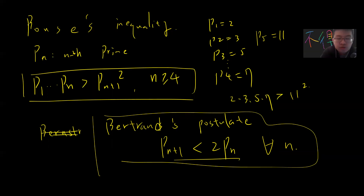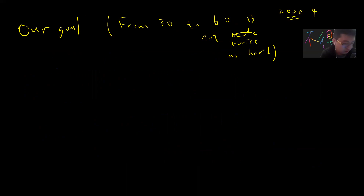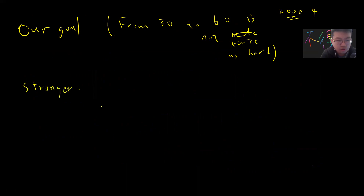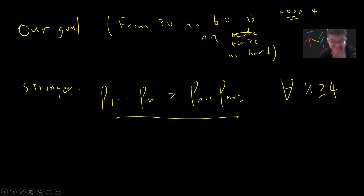In this video I want to prove a stronger result. There is an interesting paper called 'From 30 to 60 It's Not Twice as Hard,' I think from around 2000. We'll use these techniques to prove a stronger inequality: p_1 times p_2 up to p_n is greater than p_{n+1} times p_{n+2}, for n greater than or equal to 4.